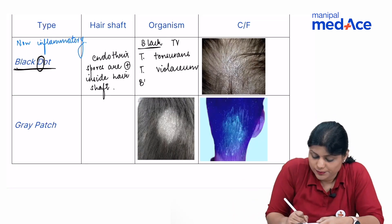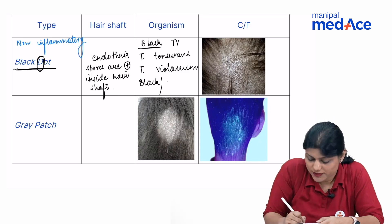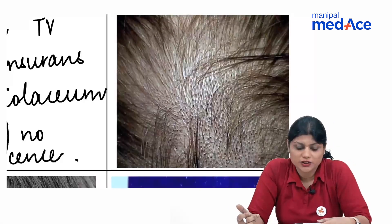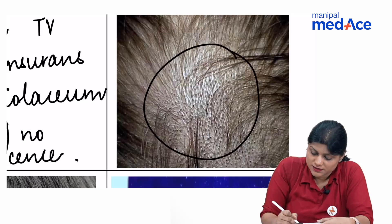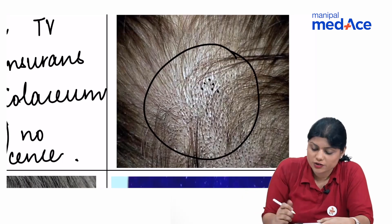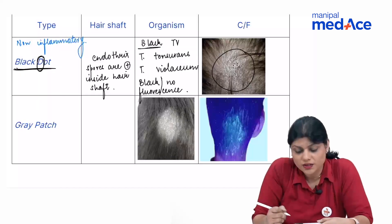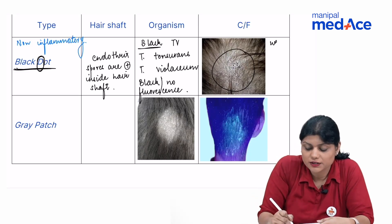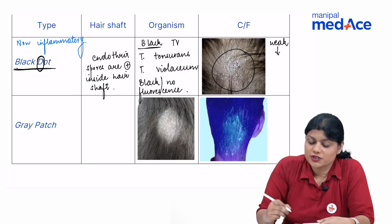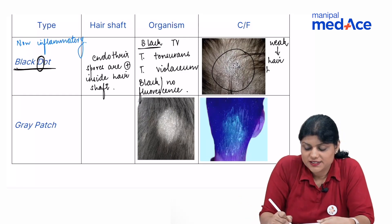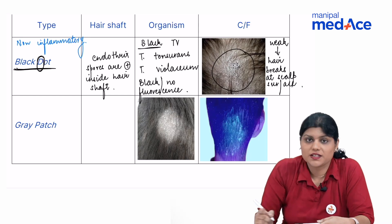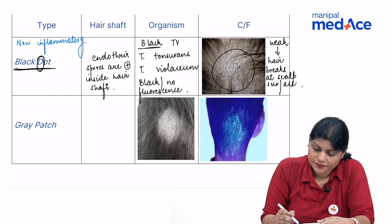Black dot shows no fluorescence on Wood's lamp. In a patient of black dot tinea capitis, you can see a patch of hair loss with black dots. As the spores are present inside the hair shaft, they make the hair weak, causing the hair to break at the scalp surface, giving the appearance of black dots.